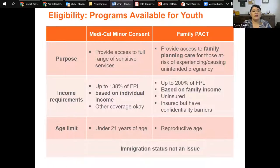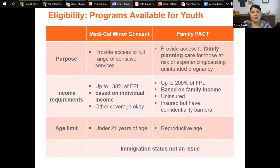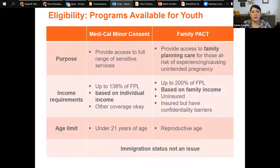This chart compares the Medi-Cal minor consent program and the Family PACT program — we often get questions about the difference between the two. The key difference is in the purpose and mission. The Medi-Cal minor consent program provides coverage for minors to access the full range of services to which they can consent; it's meant to be an episodic program and not a long-term coverage program. The Family PACT program, on the other hand, is to provide family planning care and access to birth control for people at high risk of experiencing or causing an unintended pregnancy.